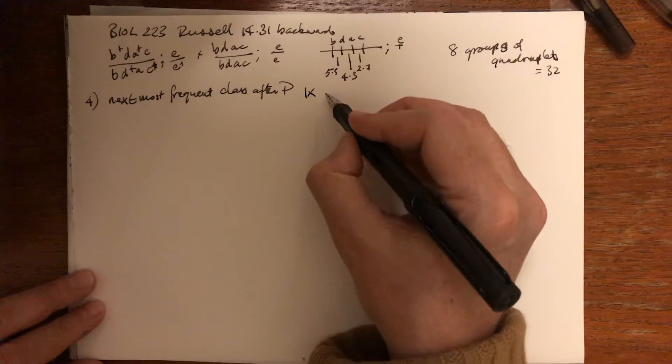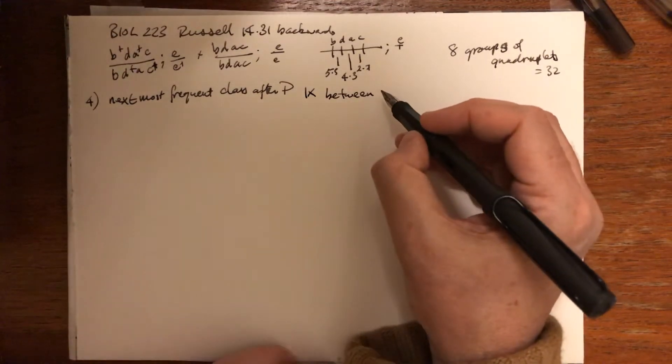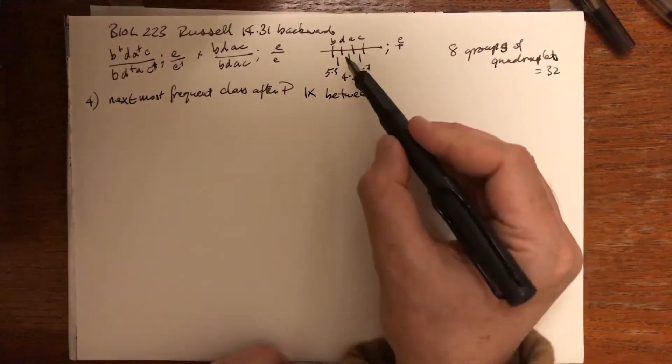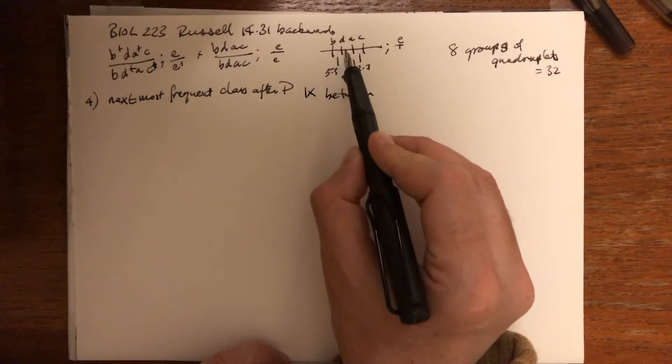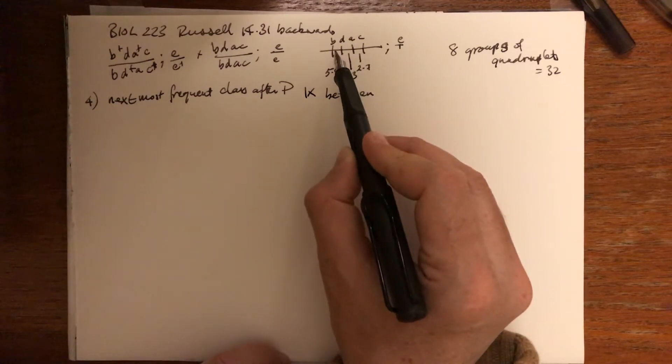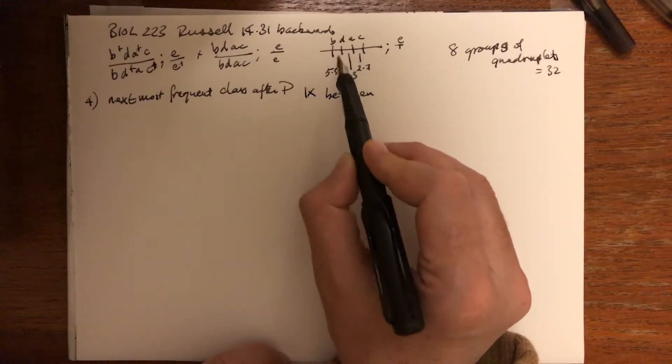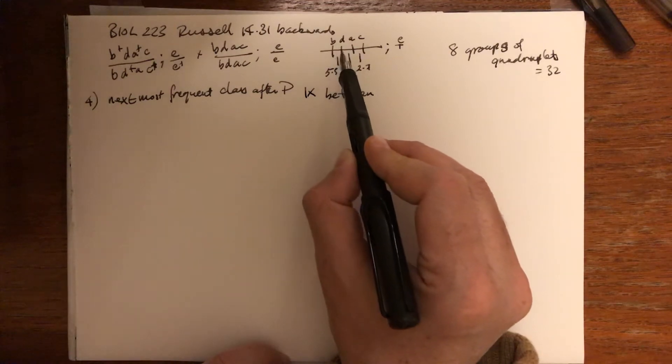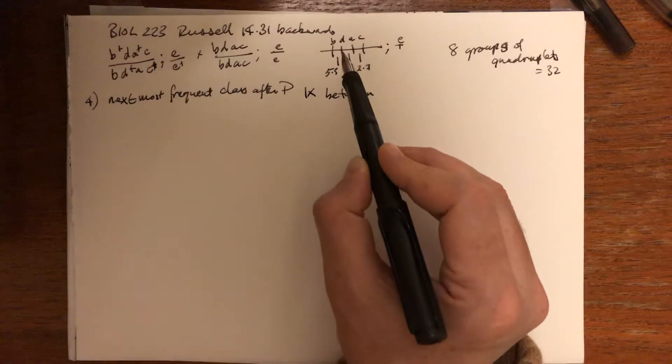Single crossing over can occur between B and D, D and A, and A and C. It doesn't make sense to say it's occurring between B and C because it matters whether it occurs here or here or here—the outcome is different. So it has to be either between B and D, or between D and A, or between A and C.